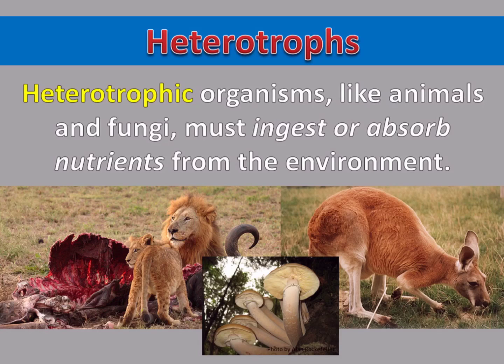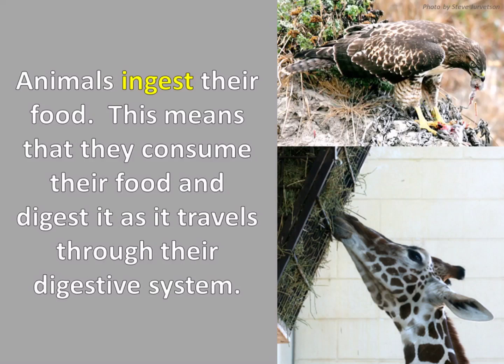Heterotrophic organisms like animals and fungi must ingest or absorb nutrients from the environment. Animals ingest their food, meaning they consume it and digest it as it travels through their digestive system.